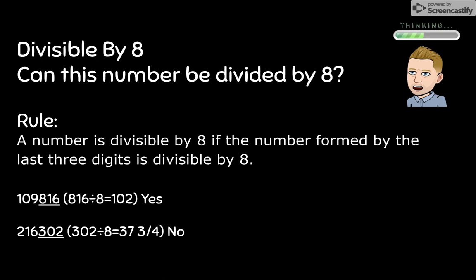So here we've got 109,816. We look at the last three digits and pretend they form a number. So the last three digits in the first example is 816. 816 divided by 8 is what? Is 102. That is a whole number. So 109,816 is divisible by 8.